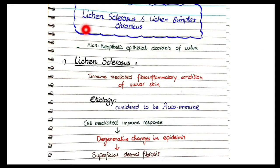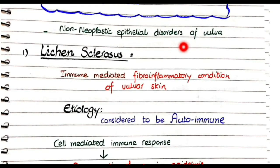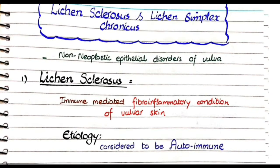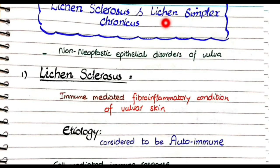In this video we will discuss the pathology of lichen sclerosis and lichen simplex chronicus. Both of these are non-neoplastic epithelial disorders of the vulva. The vulva is a part of the female reproductive tract that is externally visible.